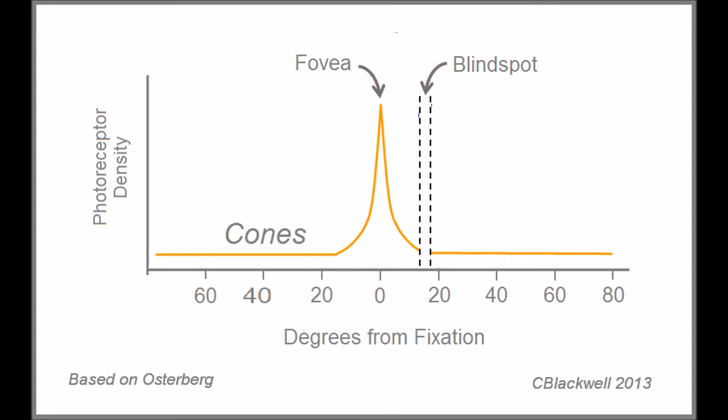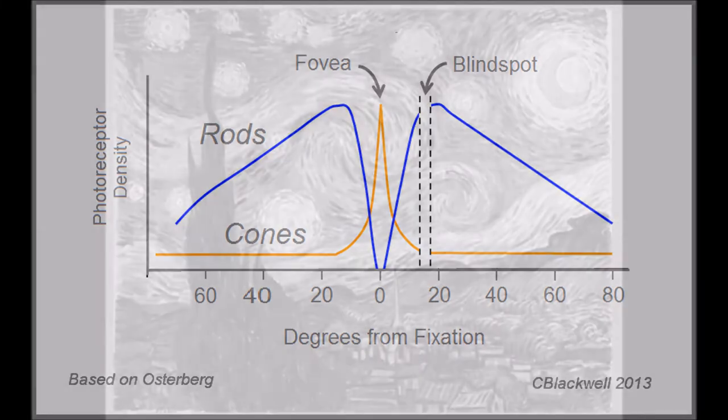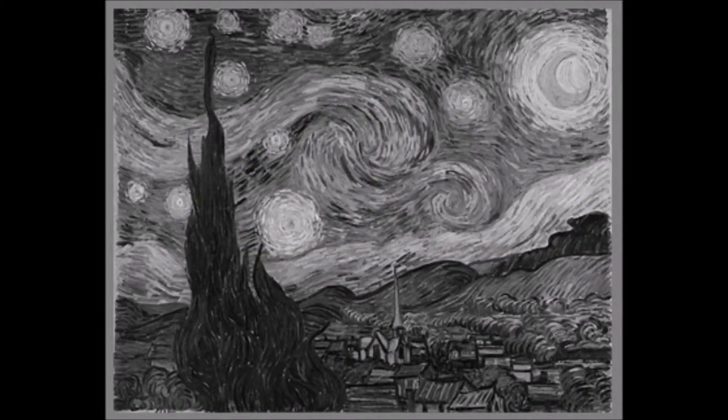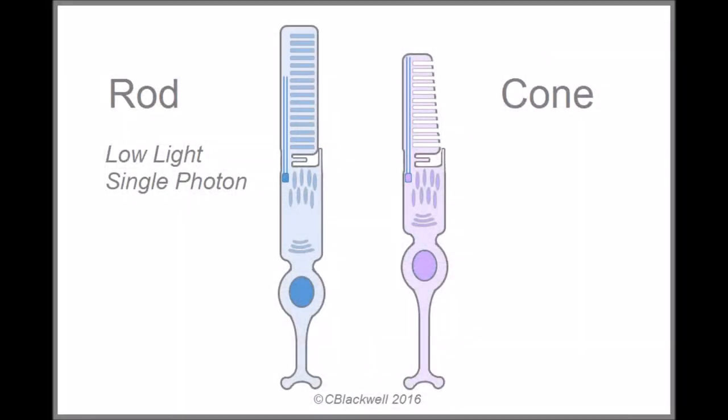Cones are concentrated within the very center of the retina, while rods dominate outside the center. Rod cells work only in low-light conditions, giving grayscale vision. They are so sensitive, they are capable of sensing a single photon arrival. Amazing.